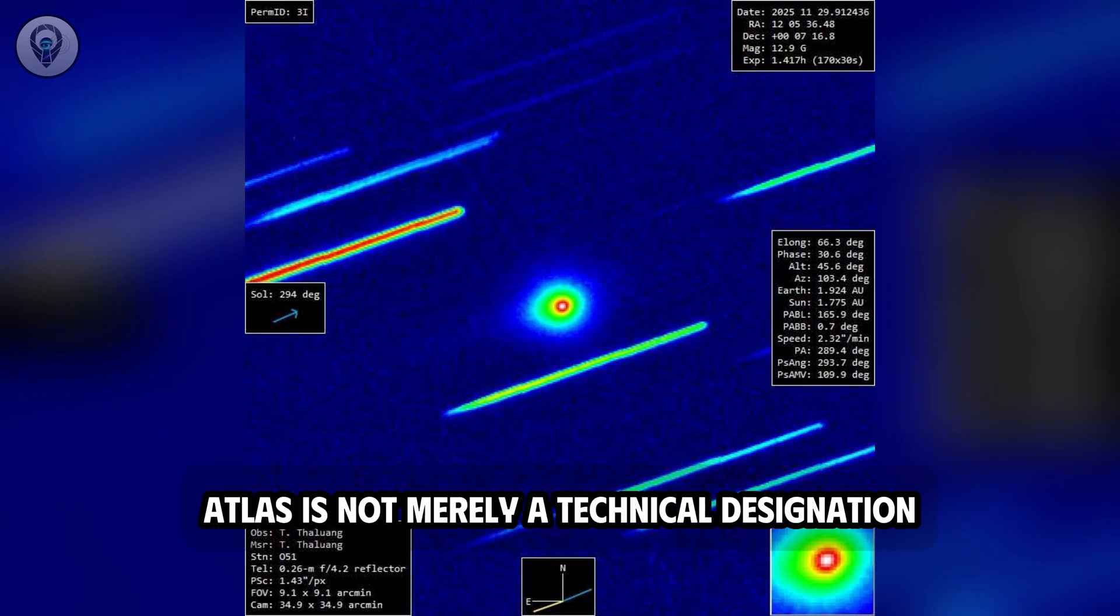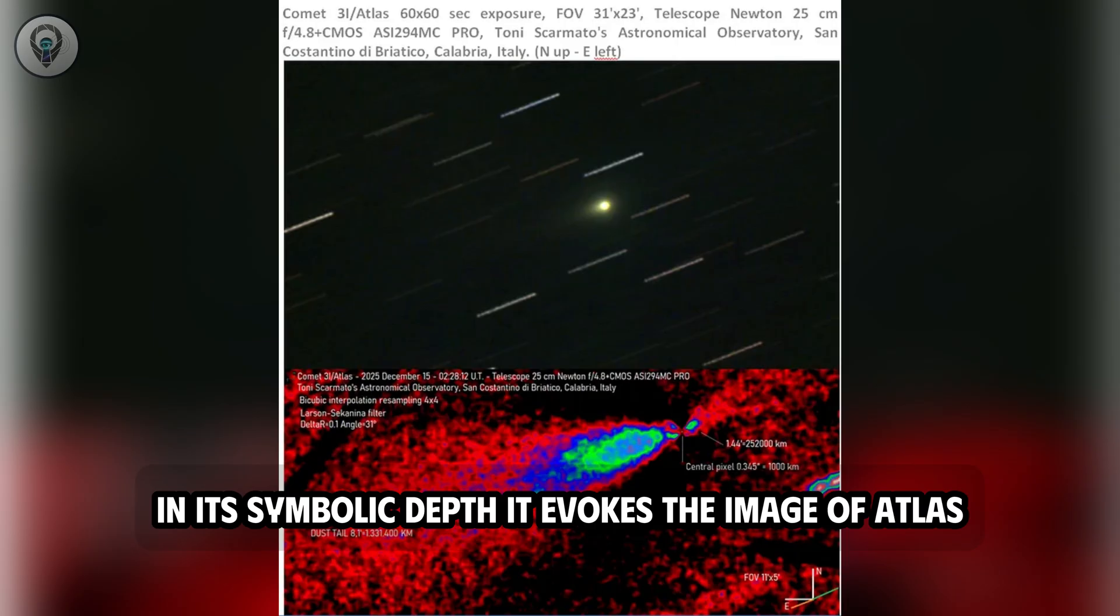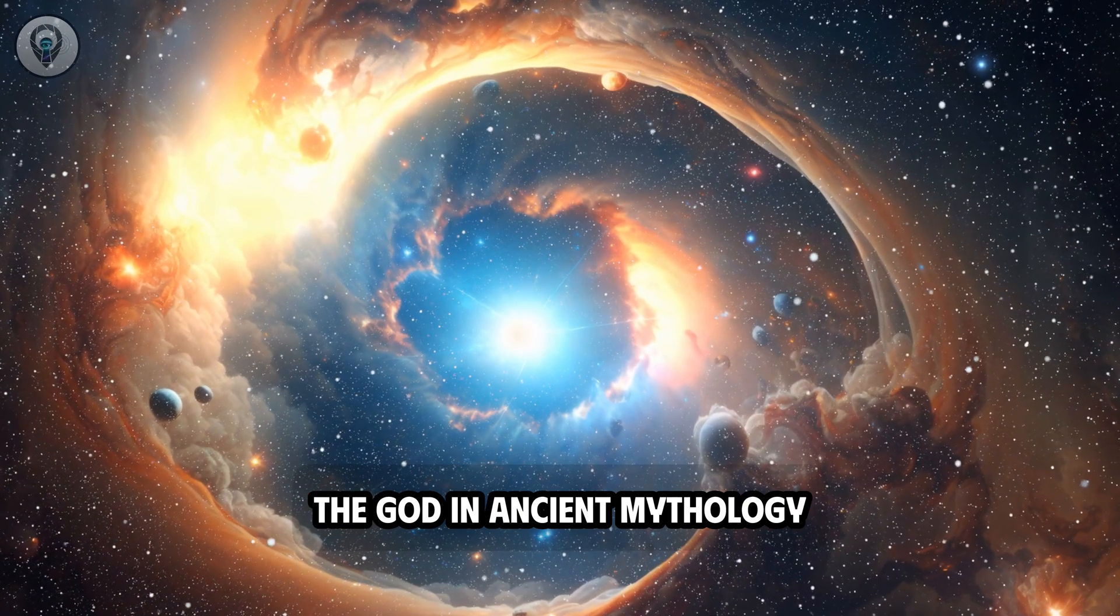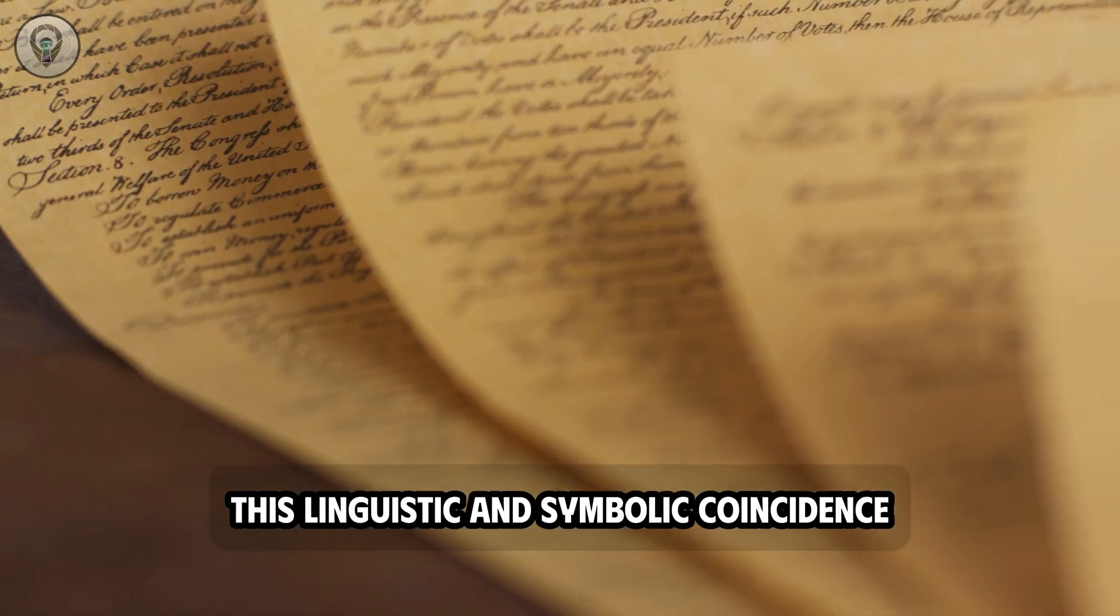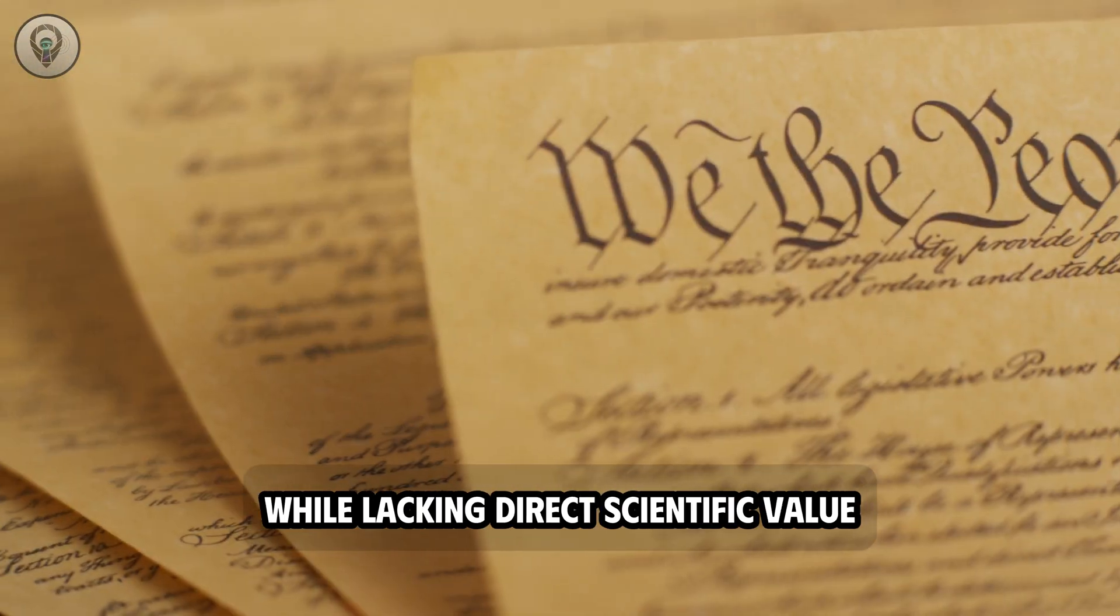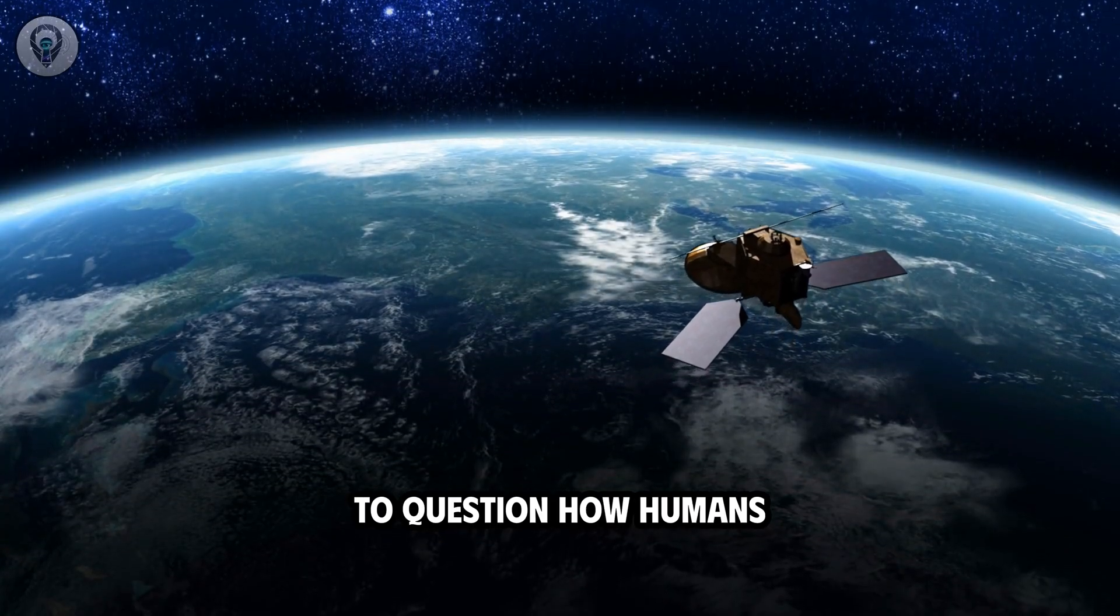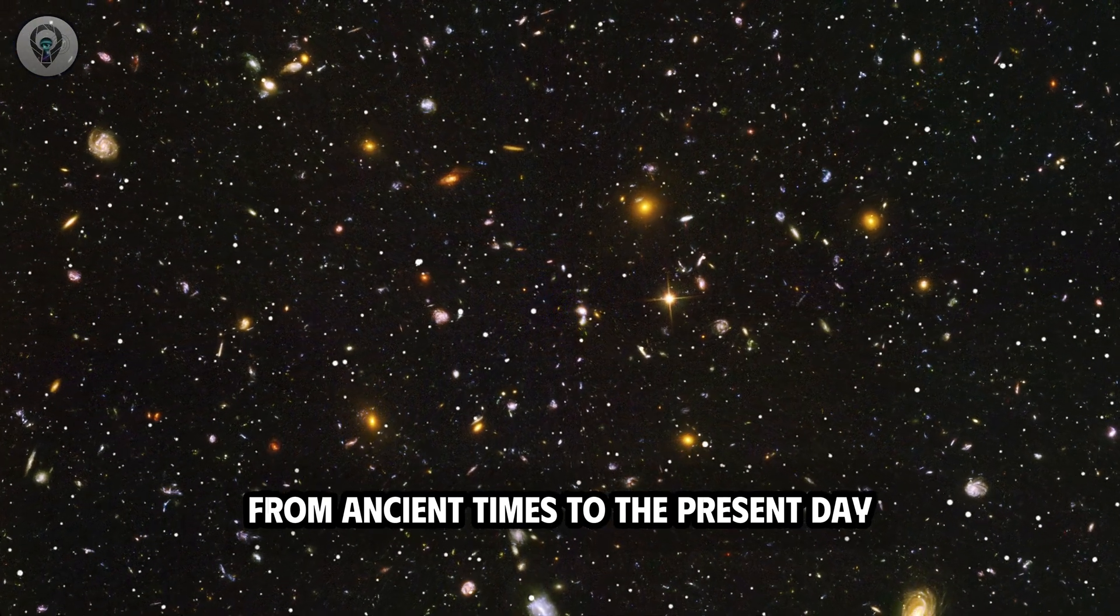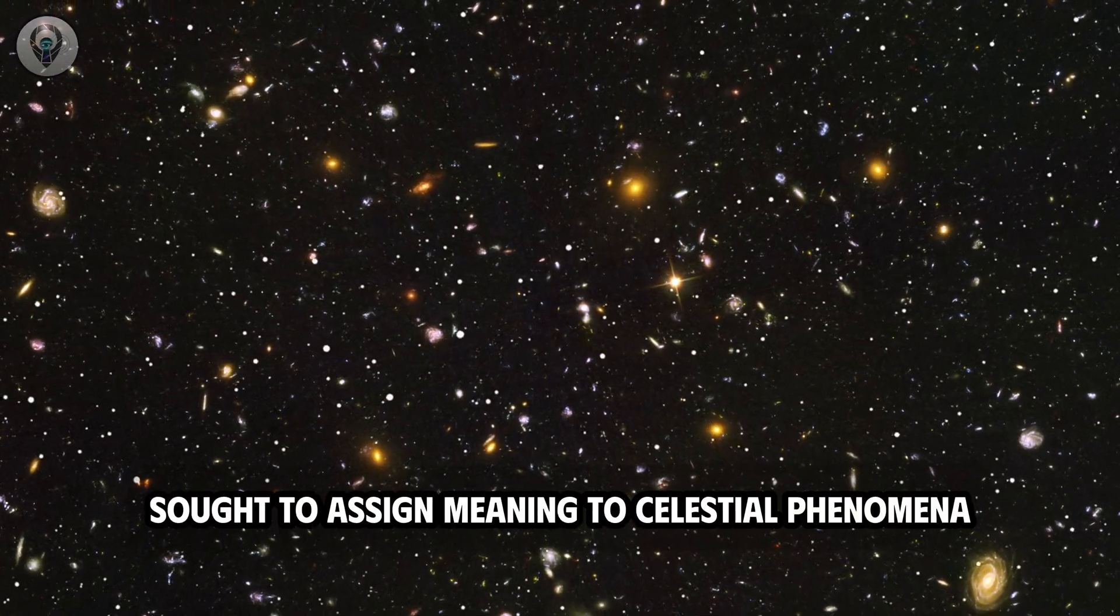Notably, the name Atlas is not merely a technical designation in astronomical observation systems. In its symbolic depth, it evokes the image of Atlas, the god in ancient mythology believed to bear the weight of the sky. This linguistic and symbolic coincidence, while lacking direct scientific value, has led many researchers and historians to question how humans, from ancient times to the present day, have consistently sought to assign meaning to celestial phenomena.